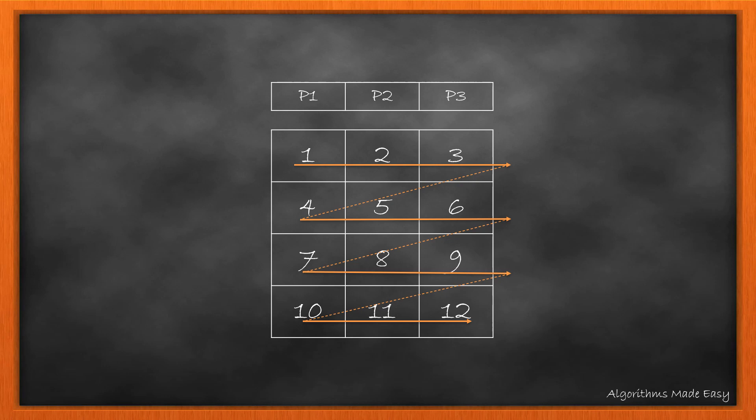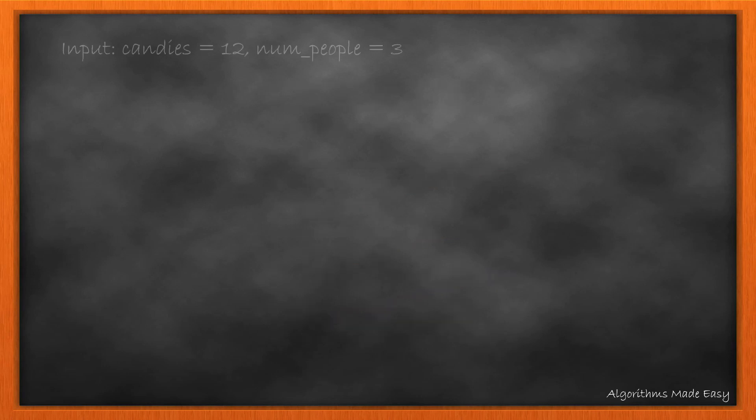If we plot the distribution in separate rows, the number of candies given to each person is shown in this table. Now, let's take an example where we have 12 candies and 3 people.